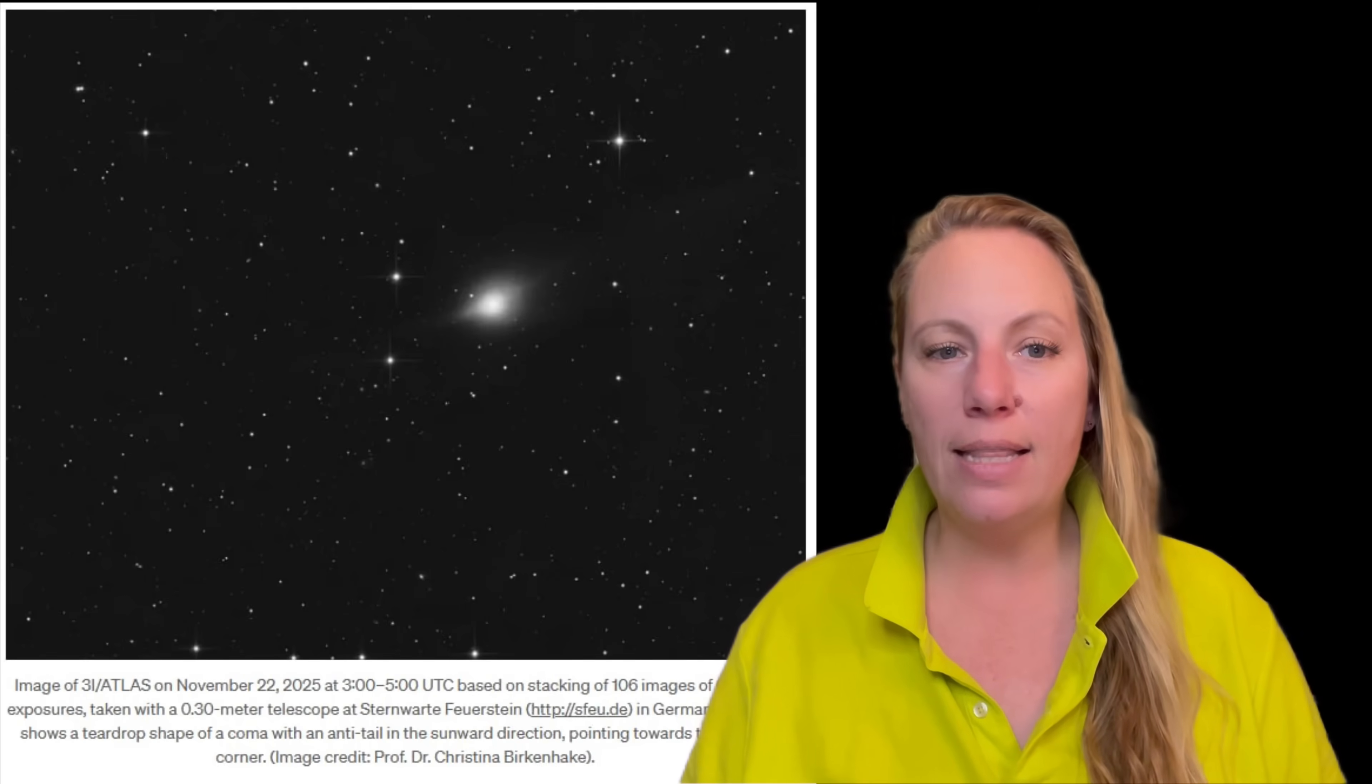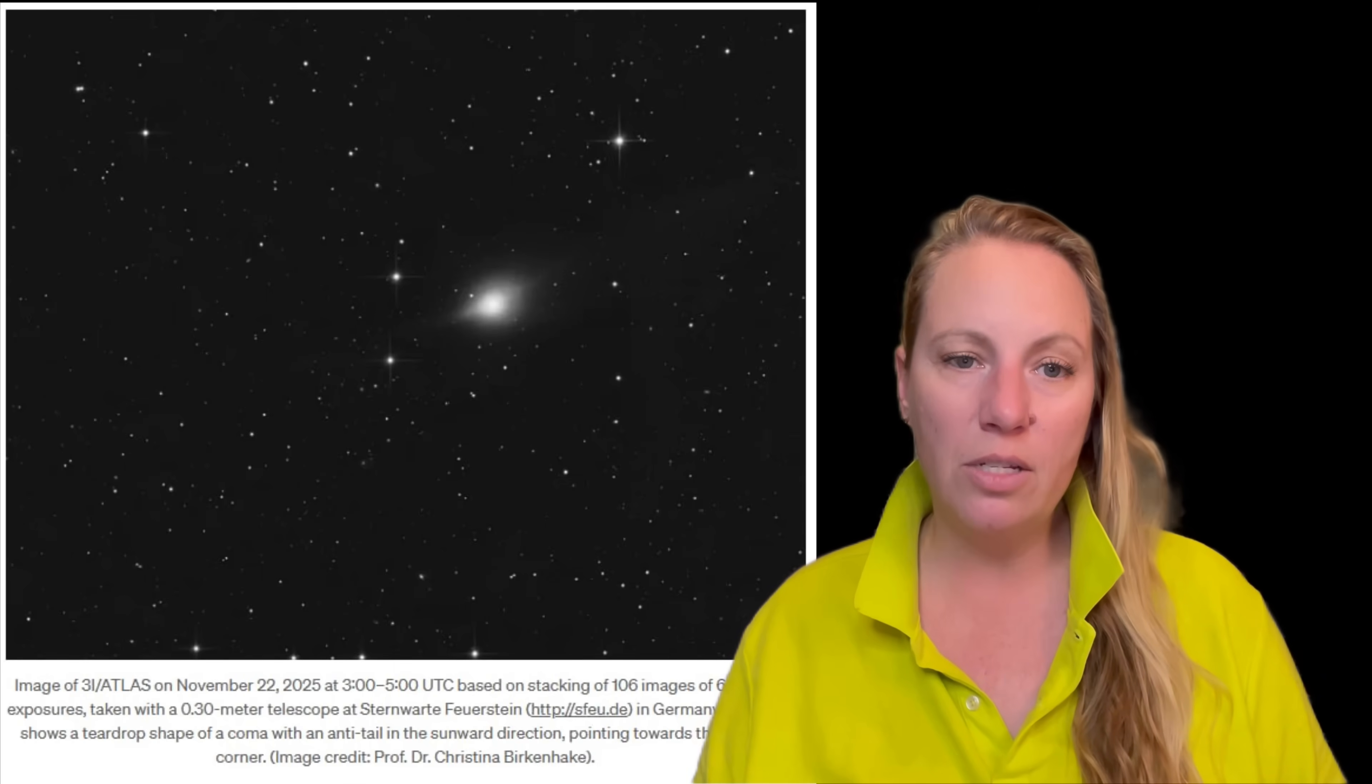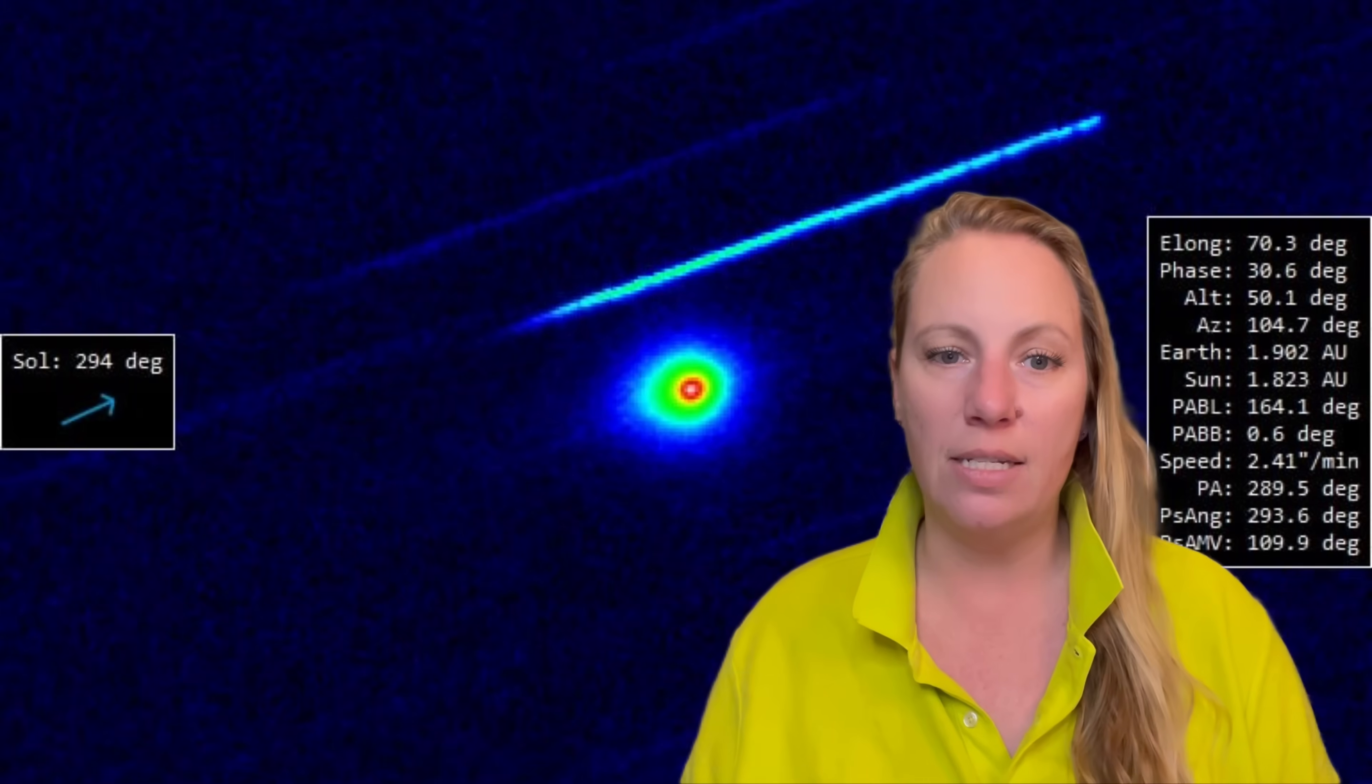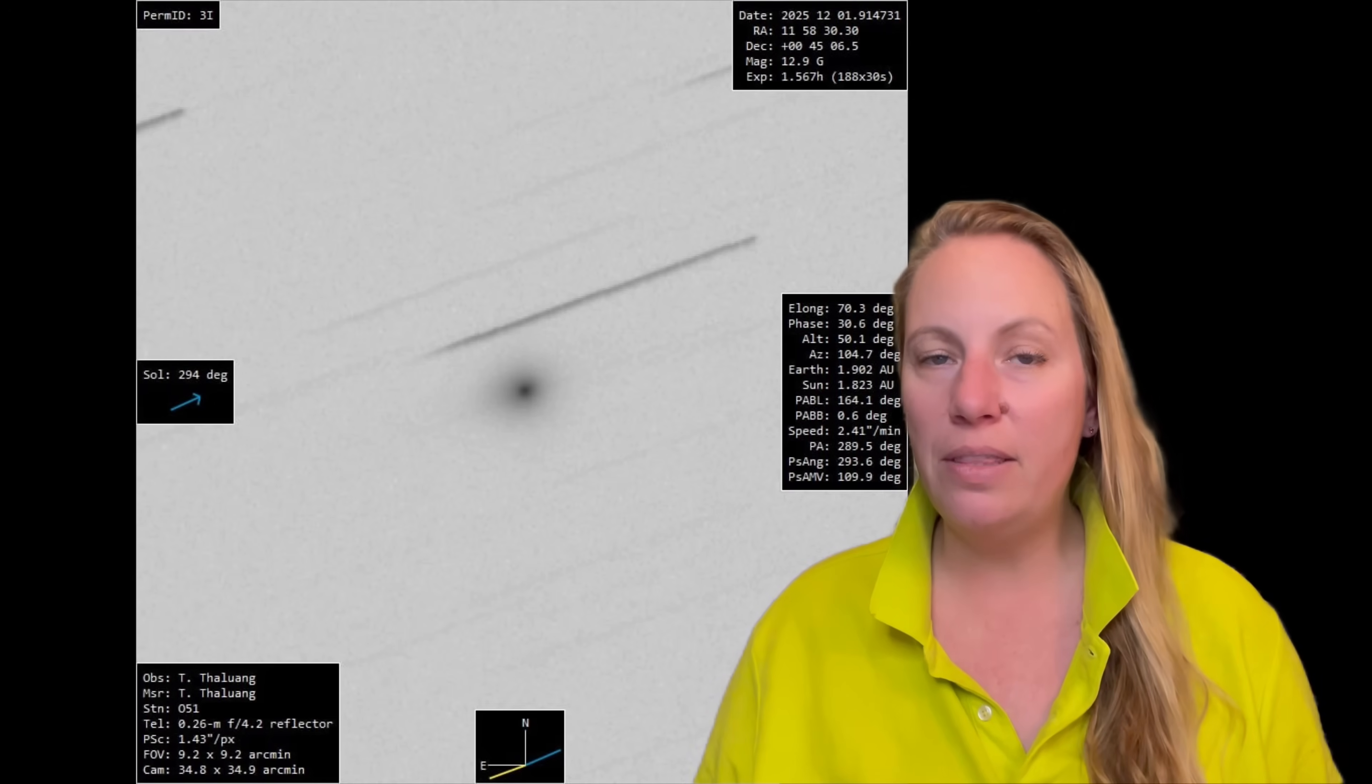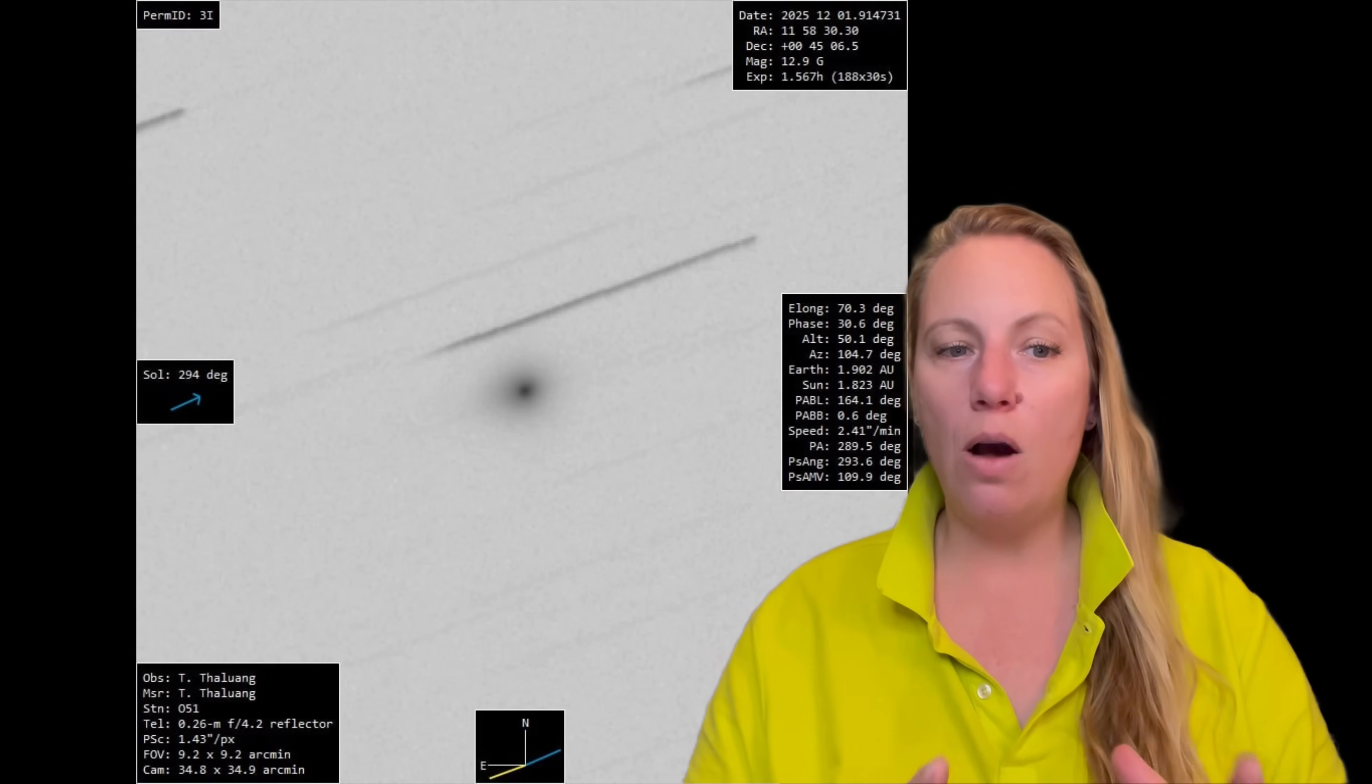Unlike many comets, 3I Atlas appears larger than typical interstellar visitors. The estimates suggest that it has a nucleus that might be between 440 meters and 5.6 kilometers across. And it moves through the inner solar system. That means the sun heats it. Ice turns into gas. It sublimates. It carries dust with it. But that fuzzy cloud around its nucleus, is this the only thing that it is? The fuzzy cloud around the nucleus is always called the coma. Plus often a tail. And in the case of 3I Atlas, more tails. So that part so far sounds like a normal comet.